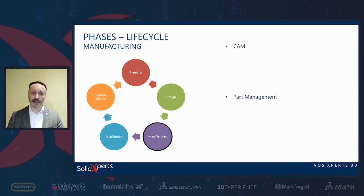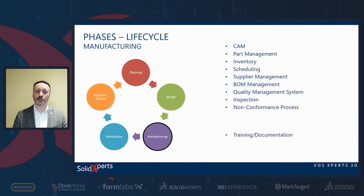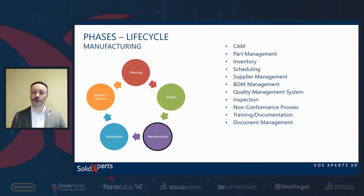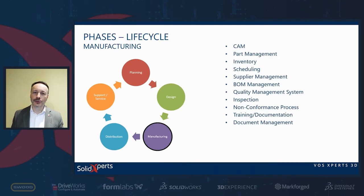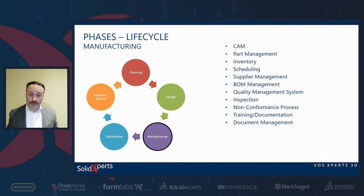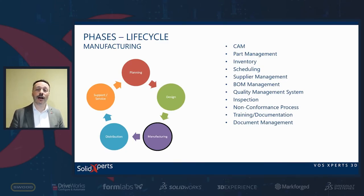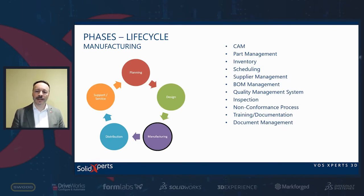Then there's the manufacturing phase, which includes other tasks: using CAM for machining, part management, inventory, scheduling — very important to schedule your resources, your suppliers, everything to ensure you can deliver a project or product on time. There's BOM management, supply management, quality management system, inspection depending on volume, non-conformance processes, training and documentation for assembly teams, and document management in this phase as well.